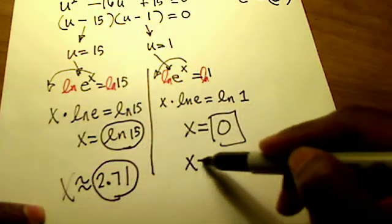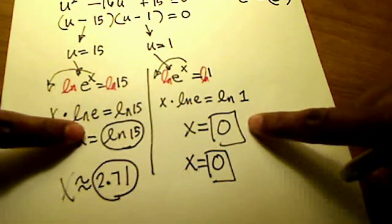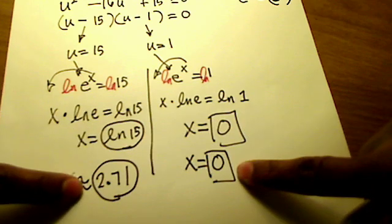And this one here is still 0. So there they are in their natural log form. There they are in their decimal equivalent form.